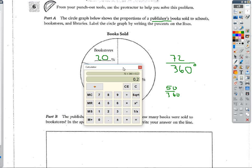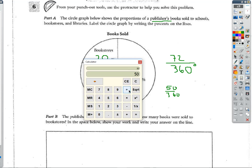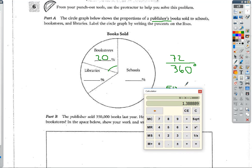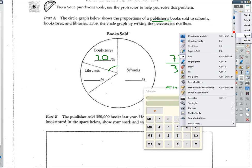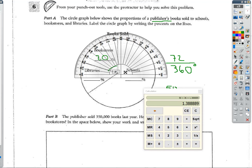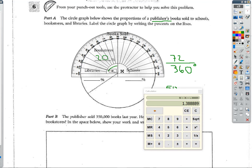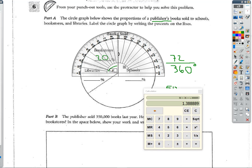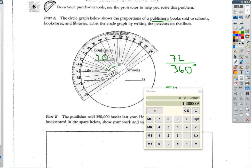So then using that same method, 50 divided by 360, 14%. I don't like that number. I want to re-measure. So there's my zero. So I'm going to actually move myself over so I can get a better view.